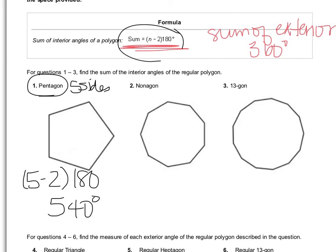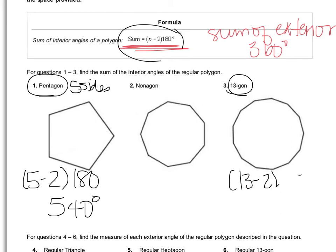For number 3, this is a 13-gon, which means it has 13 sides, so I can do 13 minus 2 times 180. When I plug that into the calculator, I get 1980 degrees.